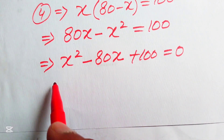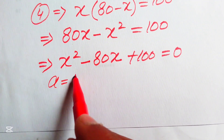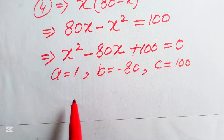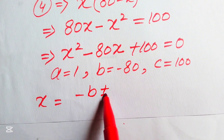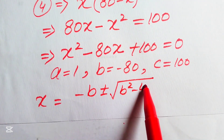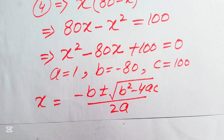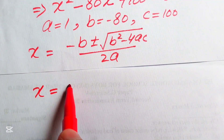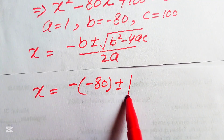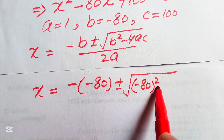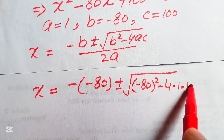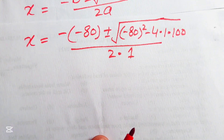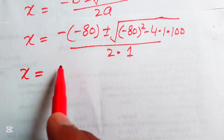We apply the quadratic formula to solve this equation. The coefficients are: a equals 1, b equals minus 80, and c equals 100. The quadratic formula is x equals minus b plus or minus the square root of b squared minus 4ac, divided by 2a. Substituting: x equals minus of minus 80, plus or minus the square root of minus 80 squared minus 4 times 1 times 100, divided by 2 times 1.